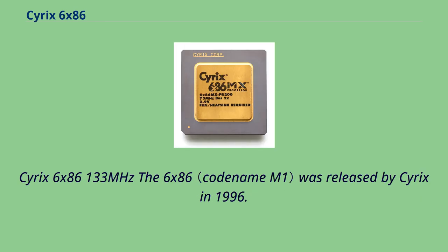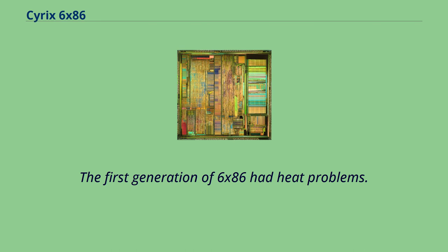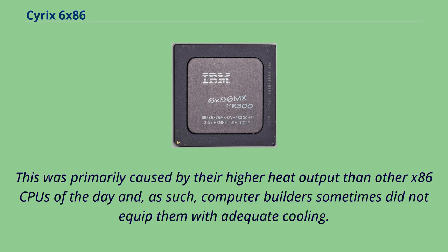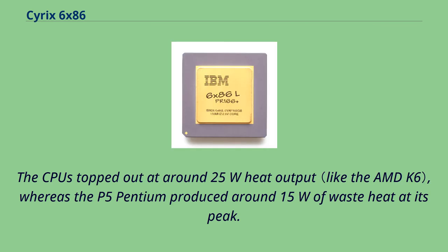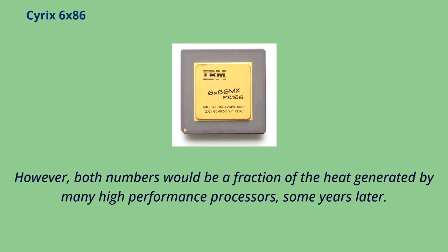The 6x86 was released by Cyrix in 1996, and the first generation had heat problems. This was primarily caused by their higher heat output than other x86 CPUs of the day, and computer builders sometimes did not equip them with adequate cooling. The CPUs topped out at around 25 W of heat output, whereas the P5 Pentium produced around 15 W of waste heat at its peak. However, both numbers would be a fraction of the heat generated by many high-performance processors some years later.